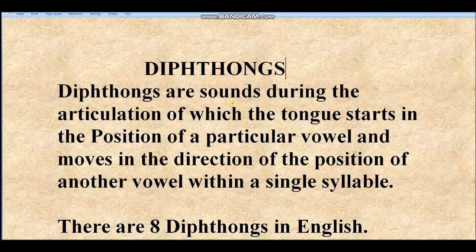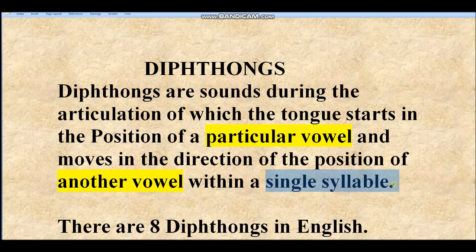So what is a diphthong? Diphthongs are sounds during the articulation of which the tongue starts in the position of a particular vowel and moves in the direction of the position of another vowel, within a single syllable. In short, two vowel sounds joined in one syllable to form one speech sound — this is called a diphthong.